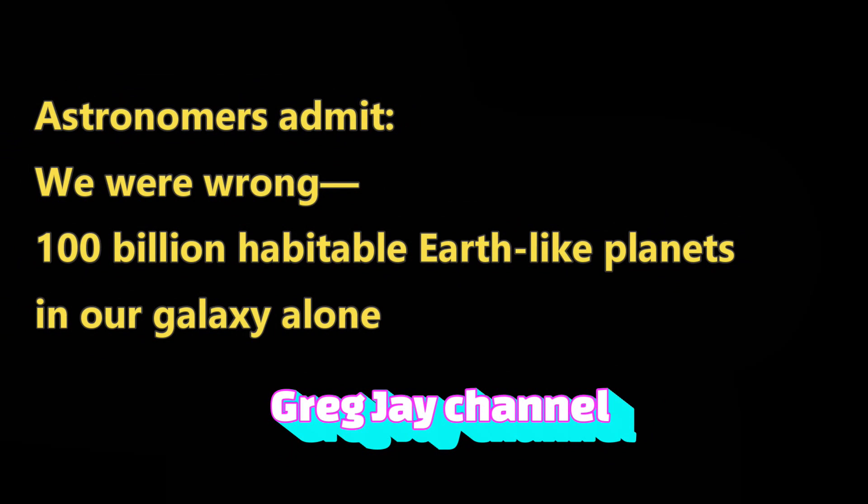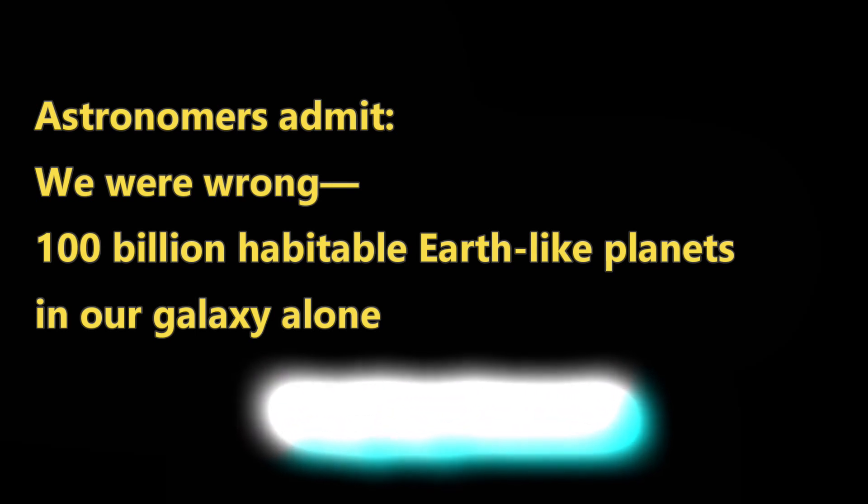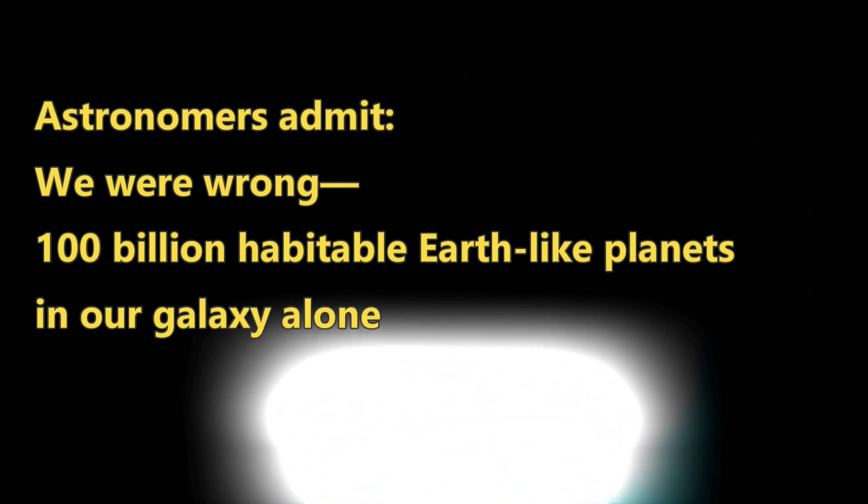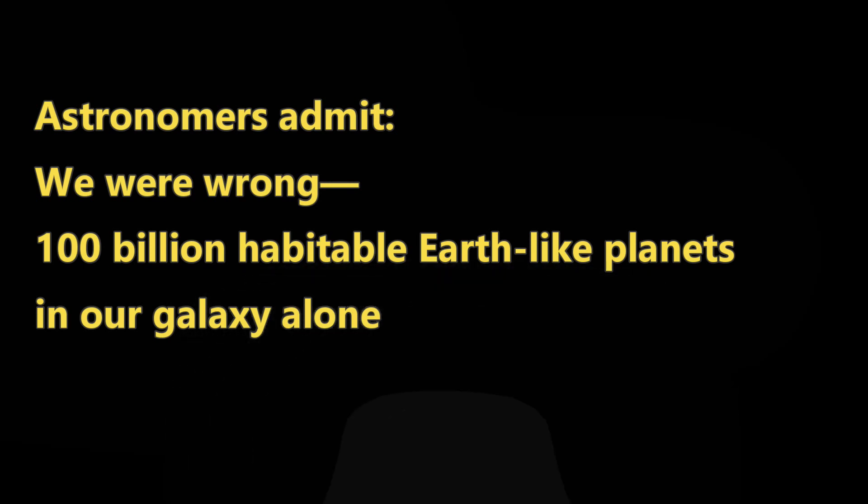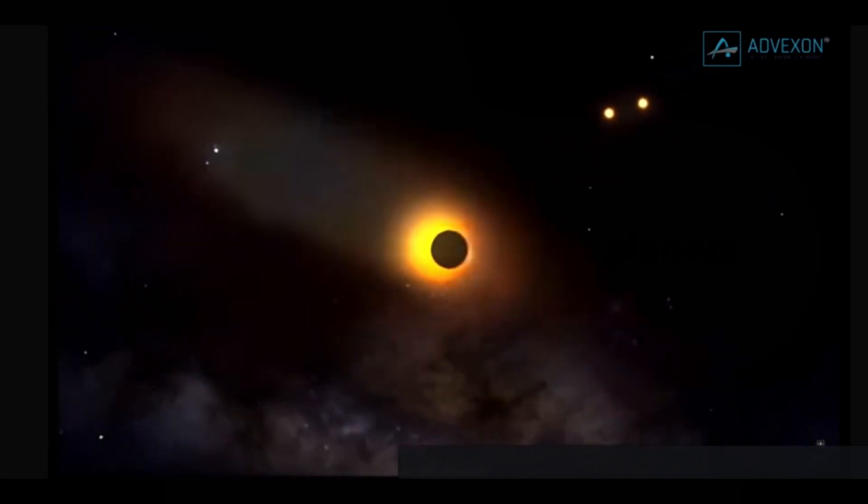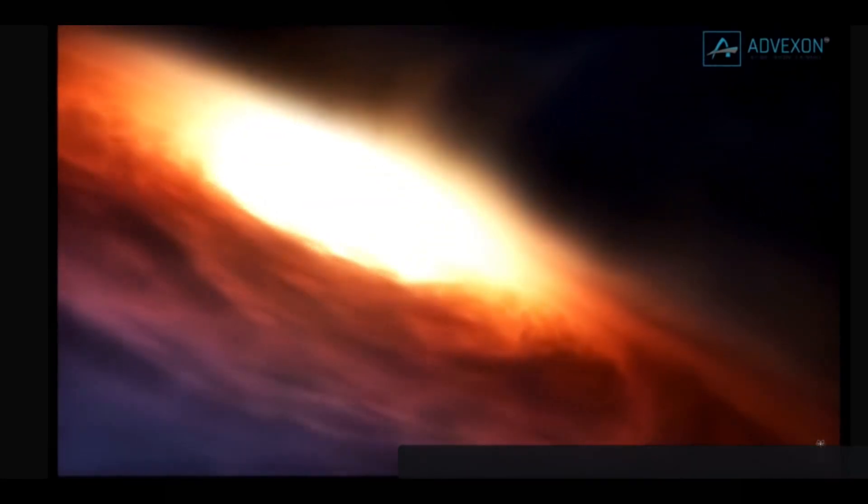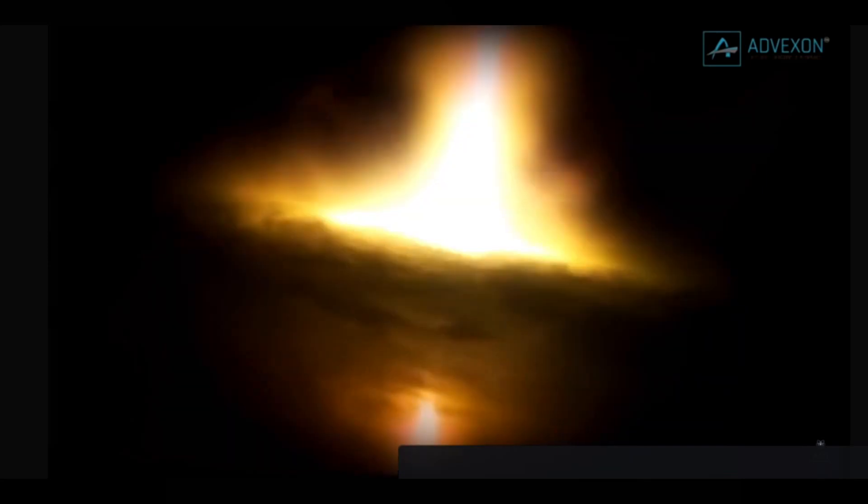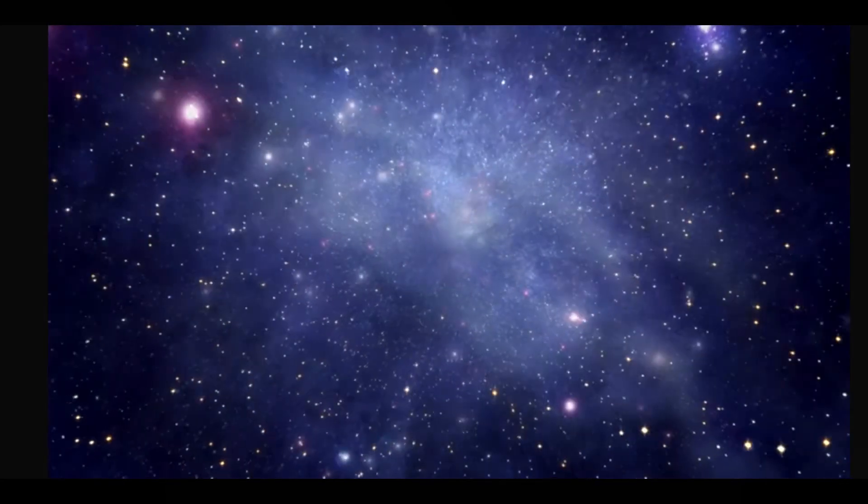Astronomers admit we were wrong. 100 billion habitable Earth-like planets in our galaxy alone. Estimates by astronomers indicate that there could be more than 100 billion Earth-like worlds in the Milky Way that could be home to life. I think that's a big number. According to astronomers, there are roughly 500 billion galaxies in the known universe, which means there are around 50 sextillion, 5 times 10 to the 22nd, habitable planets.